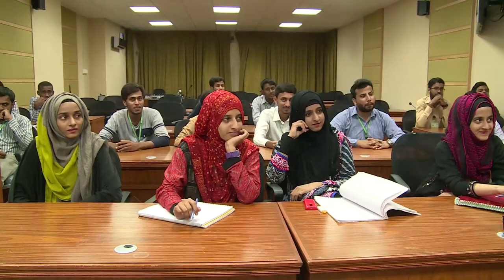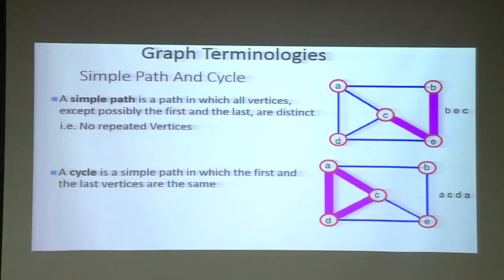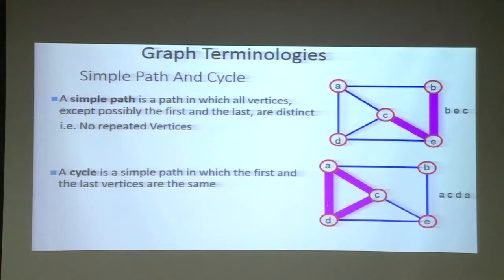A simple path is one in which the first and last vertices never repeat. For example, B-E-C is a simple path. The opposite of a simple path is a cycle, in which the first and last vertices repeat and create a loop. For example, A-C-D-A: the first vertex is A and the last is also A, creating a closed path or cycle. This type of graph is called a cyclic graph; its opposite is an acyclic graph.